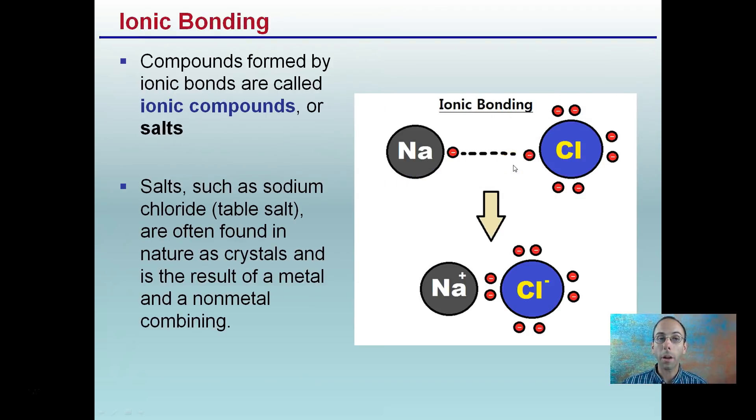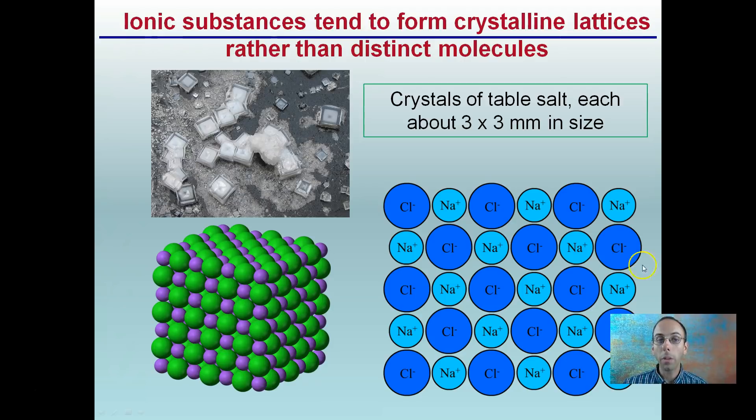So we see that depicted here. Compounds formed by ionic bonds are called ionic compounds, or salts. Probably the one we're most familiar with here is sodium chloride, which is table salt. And it's often found in nature as crystals, and it's a result of a metal and a non-metal combining. Metal and a non-metal combining. So we see here sodium losing that electron, creating a positive charge. Chlorine here gaining an electron, gaining that negative charge.